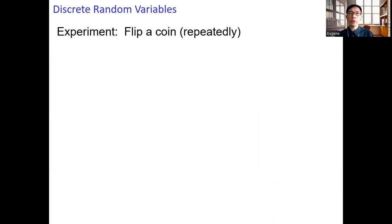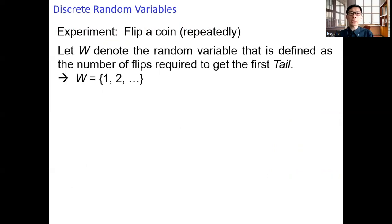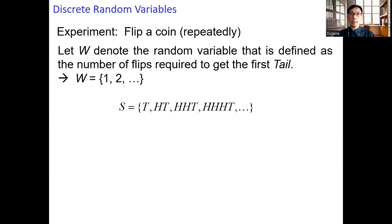Let's take a look at another example. You flip a coin repeatedly, and let W denote the random variable defined as the number of flips required to get the first tail. We have seen that W can take on values 1, 2, 3, up to infinity. The sample space includes: T (first flip is a tail, W=1), HT (second flip is the tail, W=2), HHT (W=3), HHHT (W=4), and so on forever until you get the first tail.